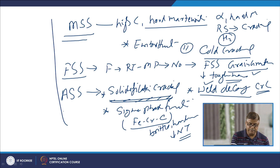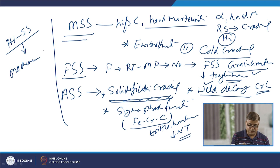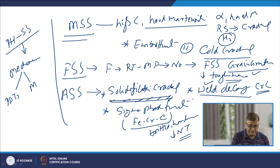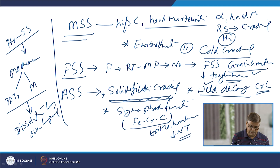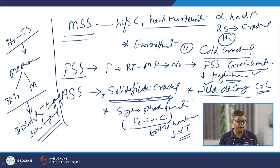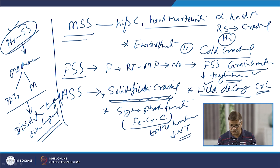The weldability of precipitation hardenable stainless steel depends upon the mechanism of strengthening — whether precipitates are being formed or martensite is formed in a very controlled way. Depending on whether dissolution, tempering, or over-tempering of the martensite is taking place, the properties of the heat affected zone will be influenced accordingly in the weld joints of precipitation hardenable stainless steels.